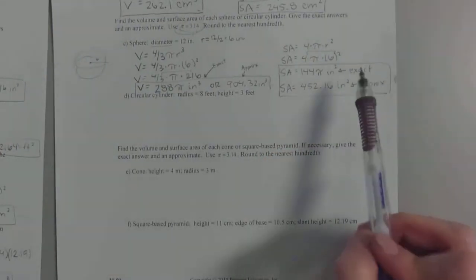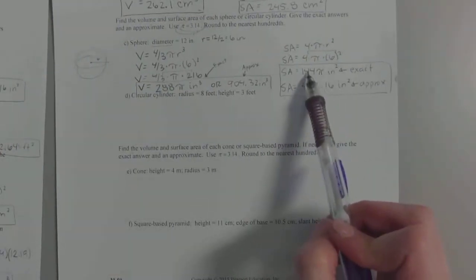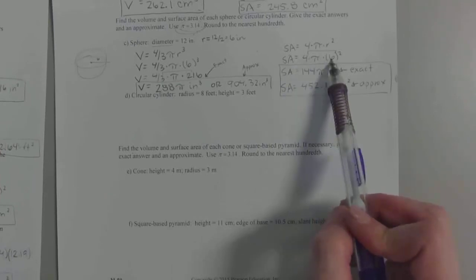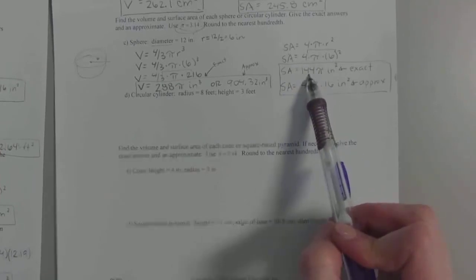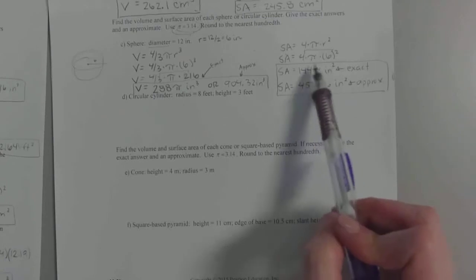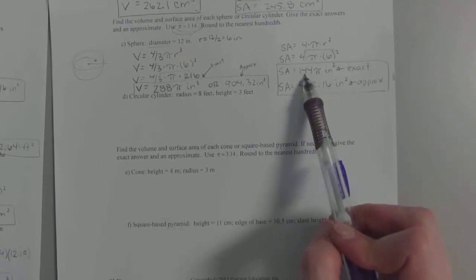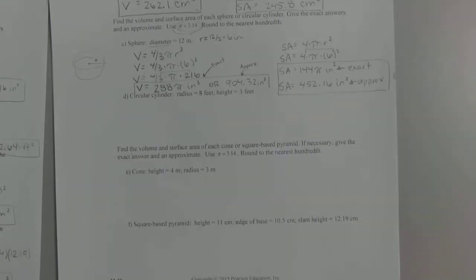So again, I'm going to repeat myself. Exact: leave pi there and do the math with everything else. So this was 4 times 6 squared, that's where the 144 came. And the approximate means now plug 3.14 in and do the math. So since this was multiplication, we just took 144 times 3.14 to get that number.